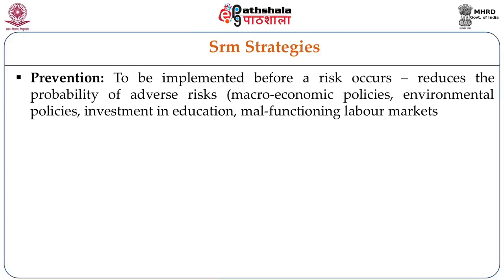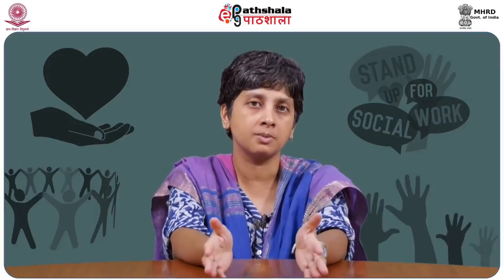SRM strategies are divided into three paths: prevention, mitigation, and coping. Prevention is meant to be implemented before a risk occurs, reducing the probability of adverse risks affecting individuals. Examples of policies that can protect against these kinds of risks include macroeconomic policies, environmental policies, investment in higher education, and addressing malfunctioning labor markets.